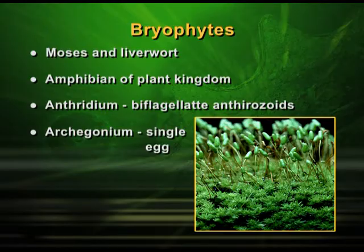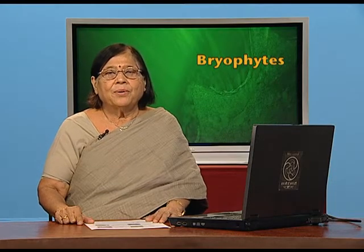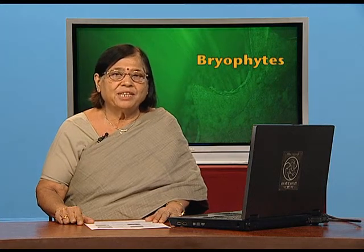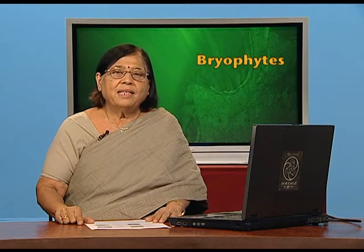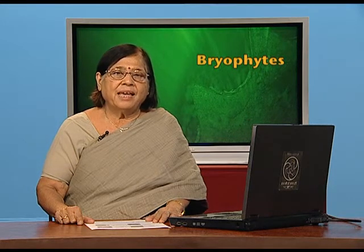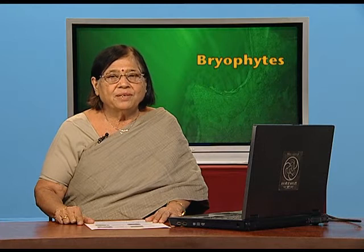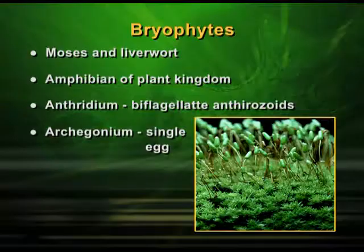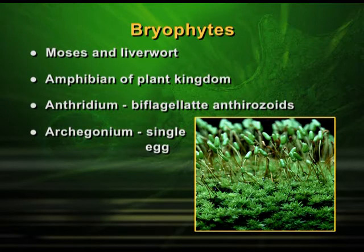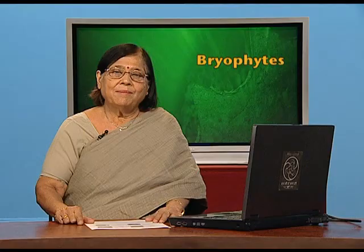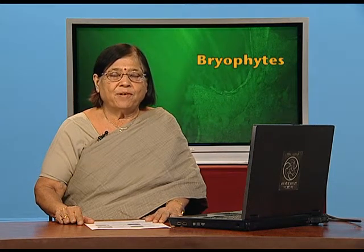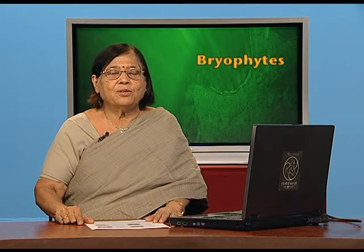The antherozoids which are produced are normally biflagellate. Bryophytes are found on rocks and the sex organs are present on the plant body, which is not very much differentiated but does have sex organs. These antherozoids move through water and reach the egg and fertilize it. This structure of the bryophyte is the gametophyte, which bears antheridium and archegonium, producing antherozoids and egg. This gametophytic structure is haploid in nature — haploid meaning half the number of chromosomes — and it produces gametes, which is why we call it gametophyte.